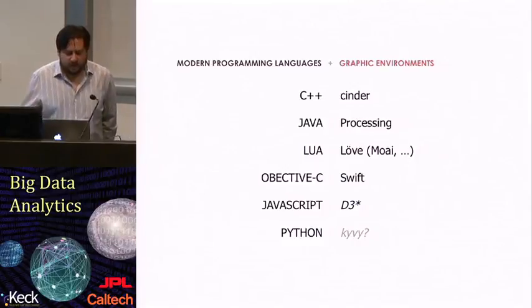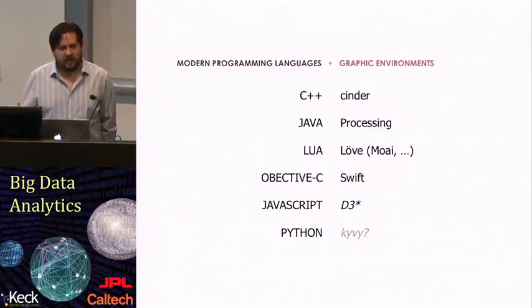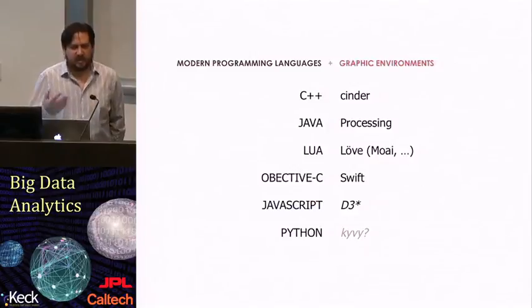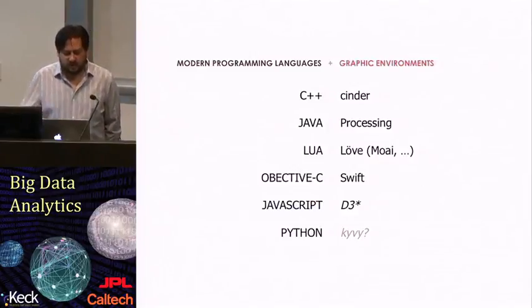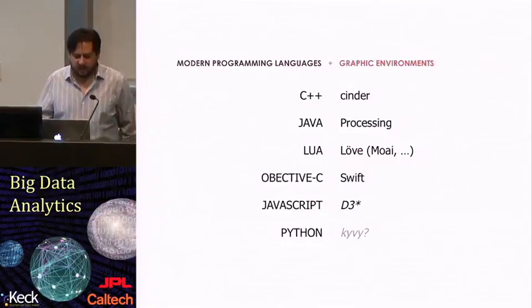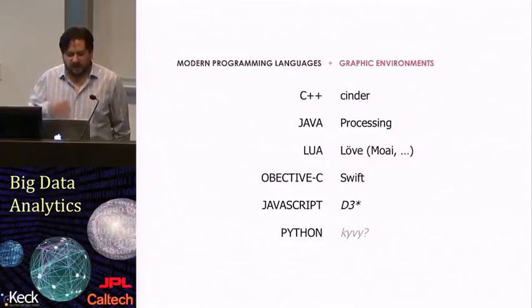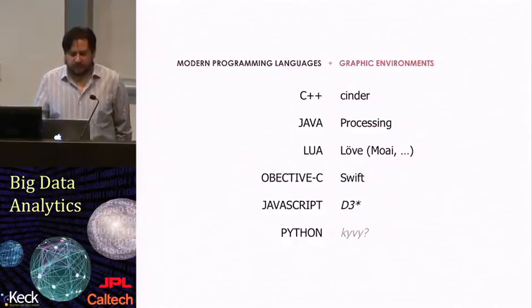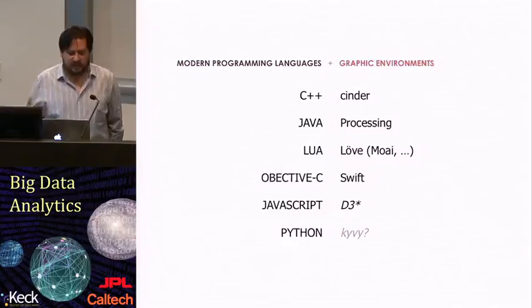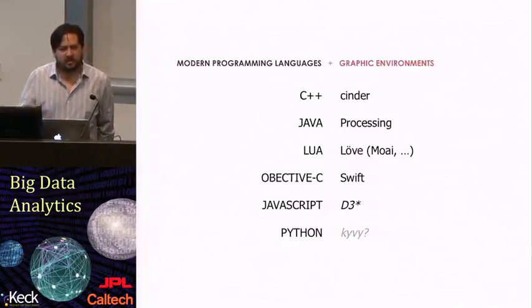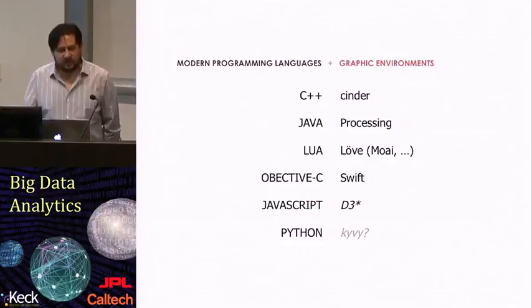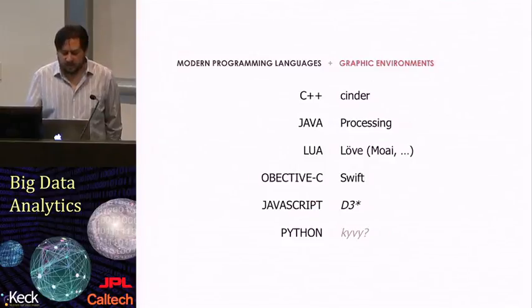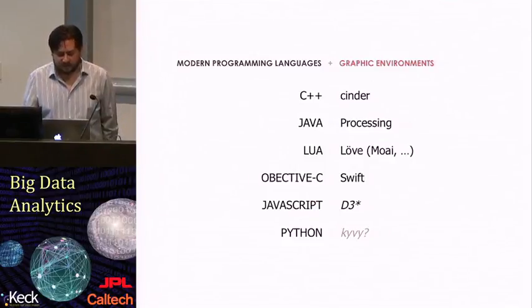A modern interpreted language called Lua that came out of Brazil actually does the same thing that Python does in terms of memory management, but does it quite quickly and lets you do things quite efficiently. Lua had a lot of momentum in the last couple of years. The graphic environments that work on top of Lua are Love and Moai. Notice that Objective-C has Swift, and then JavaScript—an easier way to create graphics within JavaScript is this language called D3, or this package called D3. We'll talk a little more about D3 in the next section.